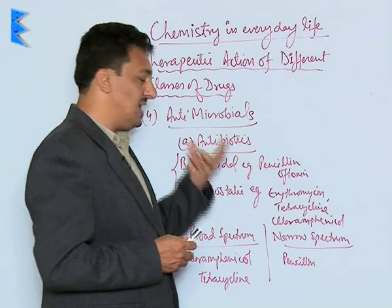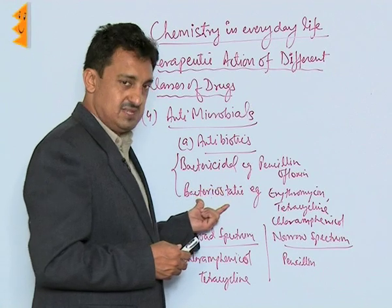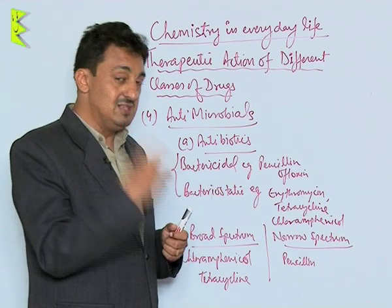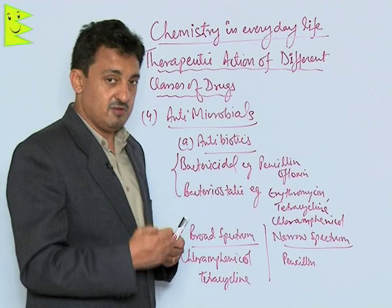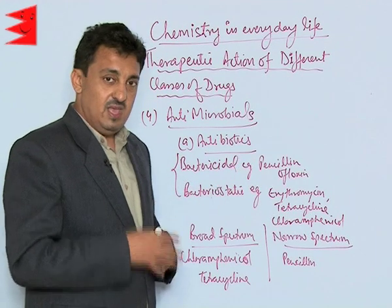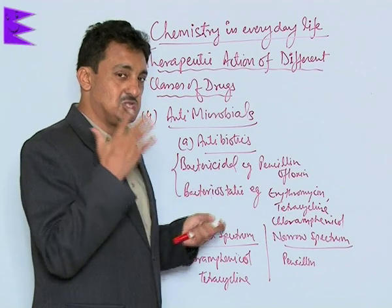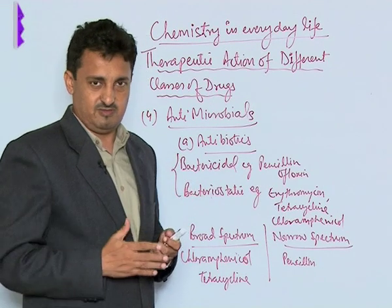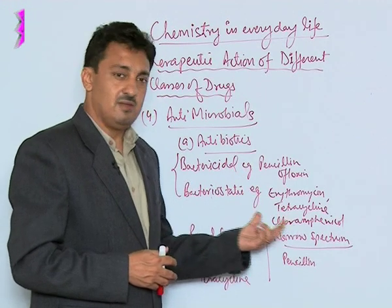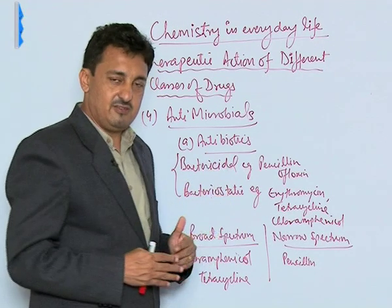Antibiotics can be categorized into two types: bactericidal and bacteriostatic. Bactericidal antibiotics kill the microorganisms — they are very strong, like penicillin and ofloxacin. Bacteriostatic antibiotics stop the growth of microorganisms, and these include erythromycin, tetracycline, and chloramphenicol. So these are the two basic types of antibiotics.